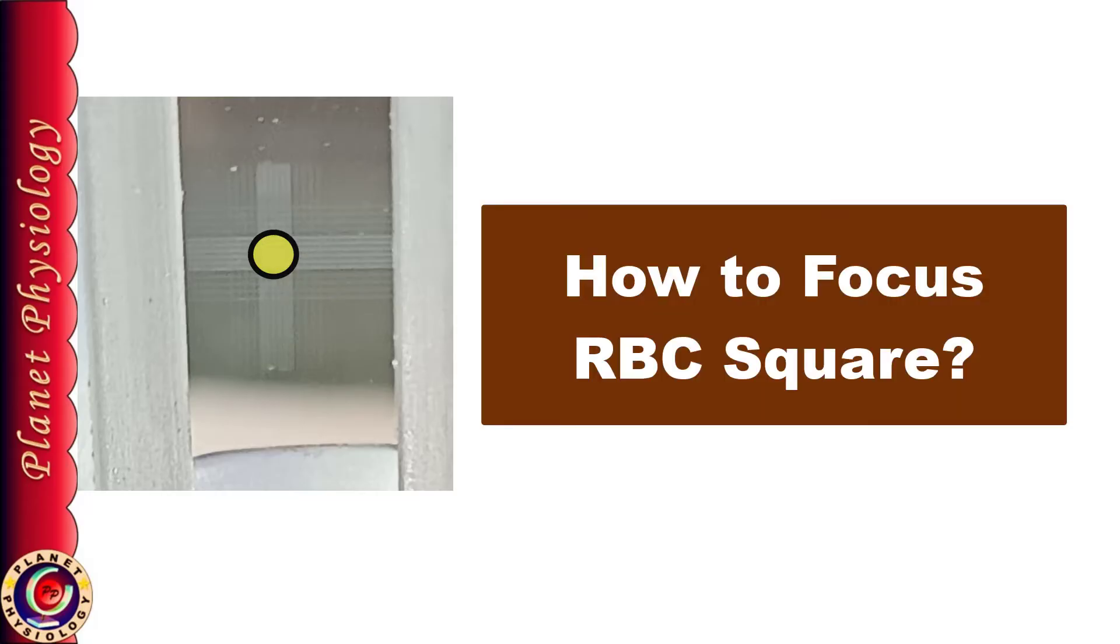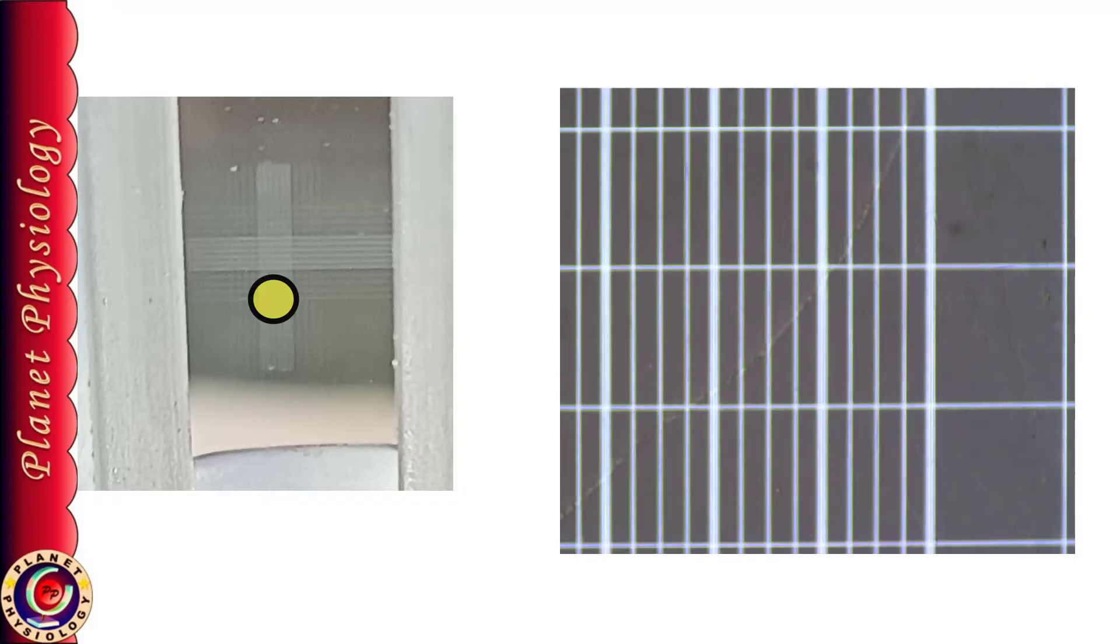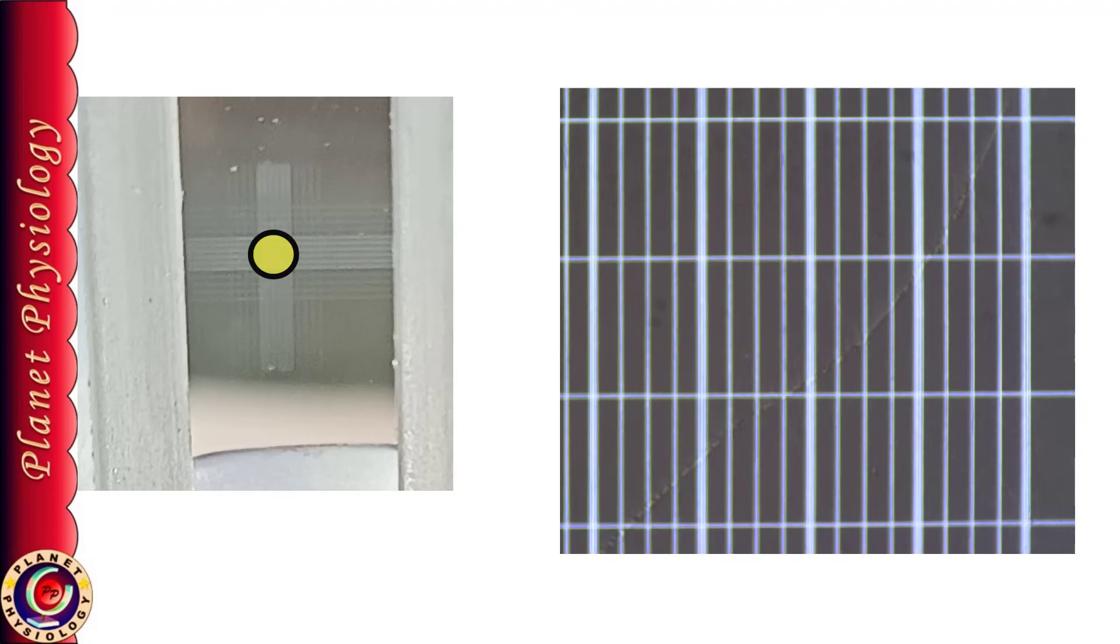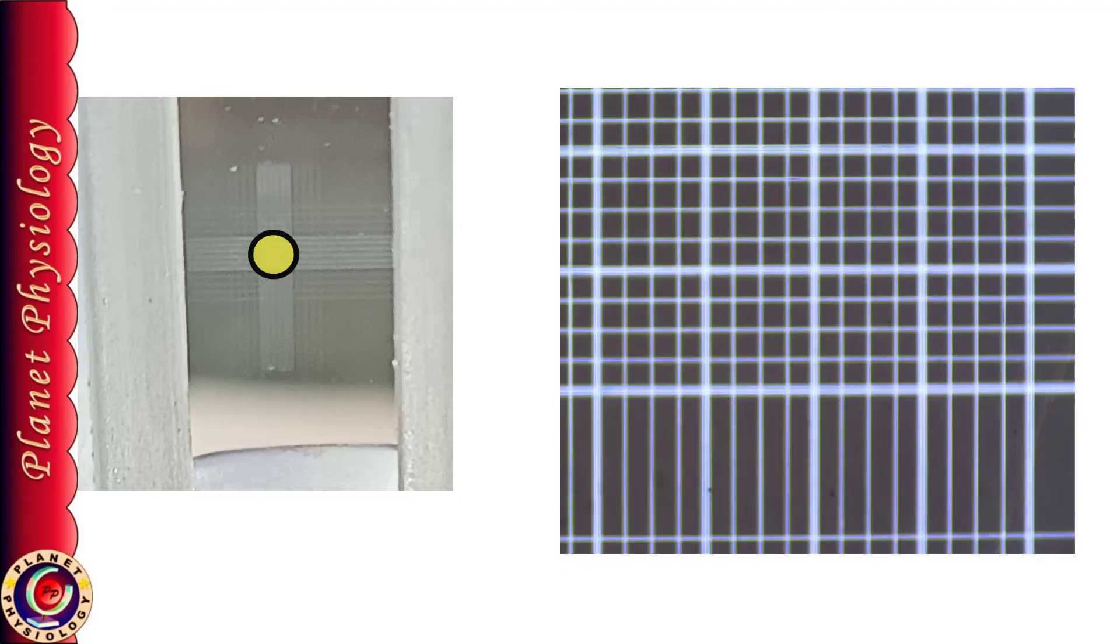If your aim is RBC count, then you need to focus RBC square under the low power first. For this, move your stage to focus the part of the grid between the WBC squares. Here you are observing only the rectangles and not the squares.